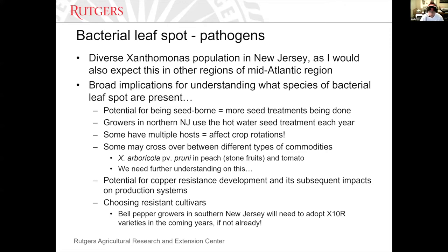Now there is the potential for copper resistance. We've known for years that we probably have copper resistance in New Jersey, but this is the first time I've been able to team up with colleagues on campus to actually do this testing in New Brunswick. When it comes to dealing with bacterial leaf spot, particularly on peppers, choosing resistant cultivars is extremely important. Phytophthora is also an extremely important disease in pepper and tomato in New Jersey — we've relied on Phytophthora-resistant/tolerant bell pepper varieties for nearly 25 years. Since we've detected all 10 races of bacterial leaf spot in New Jersey, growers in the southern part of the state are really going to have to adopt these X10R varieties of bell peppers.